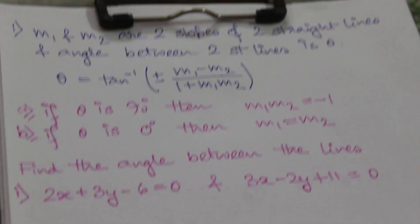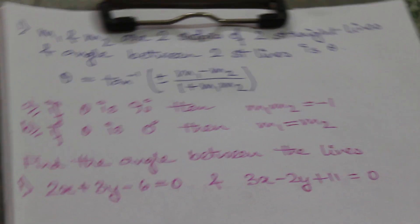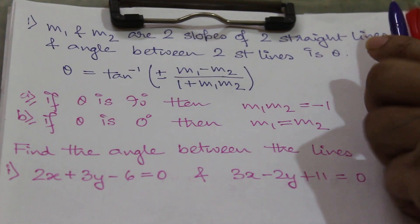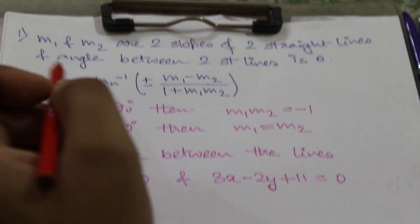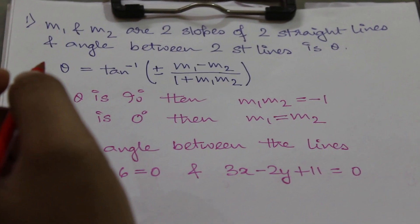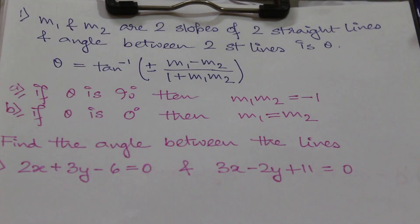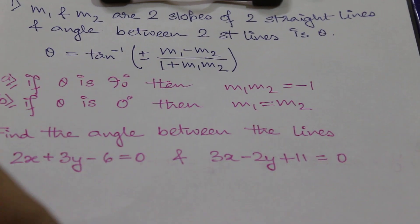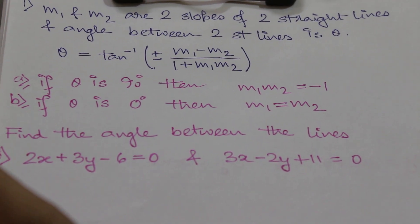So let's start. If m1 and m2 are the slopes of two straight lines, and the angle between them is theta, then the relation is θ = tan⁻¹(±(m1 - m2)/(1 + m1·m2)). This is the formula.